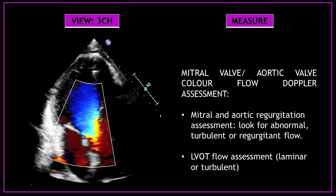To finalize, use color Doppler to assess the blood flow across the mitral valve and aortic valve. As part of the mitral and aortic regurgitation assessment, look for abnormal, turbulent, or regurgitant flow. Also assess the flow across the left ventricular outflow tract and look for laminar or turbulent flow.